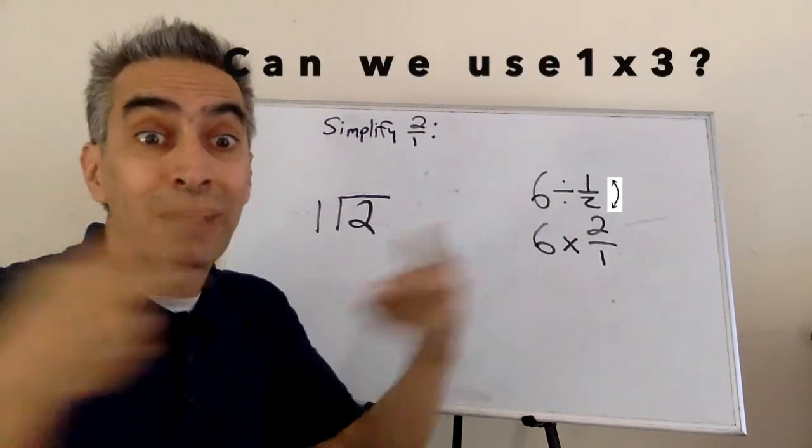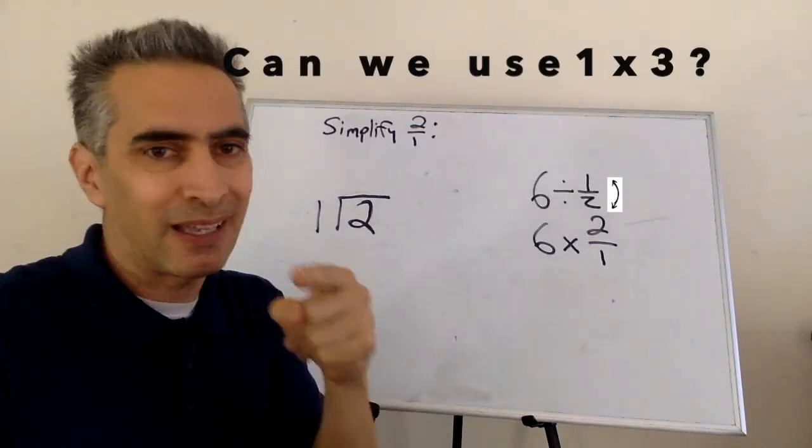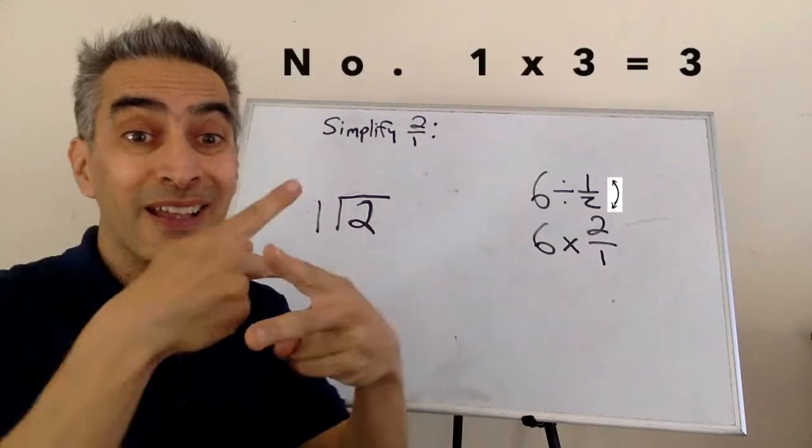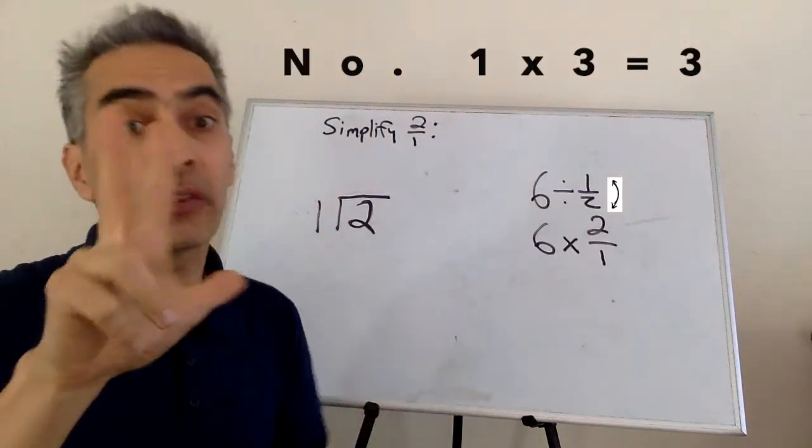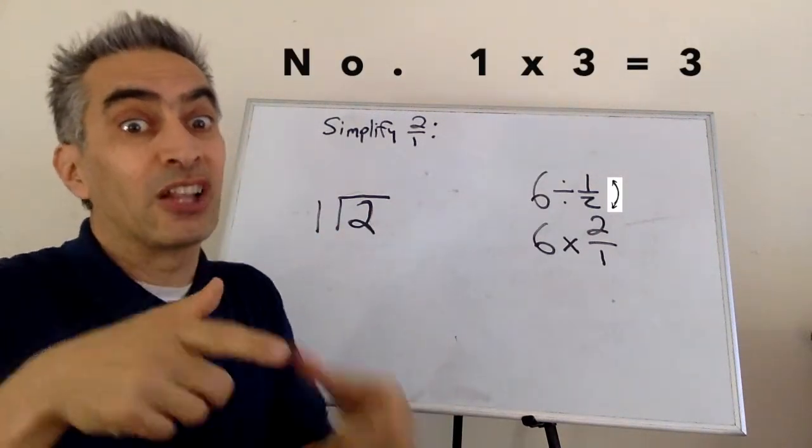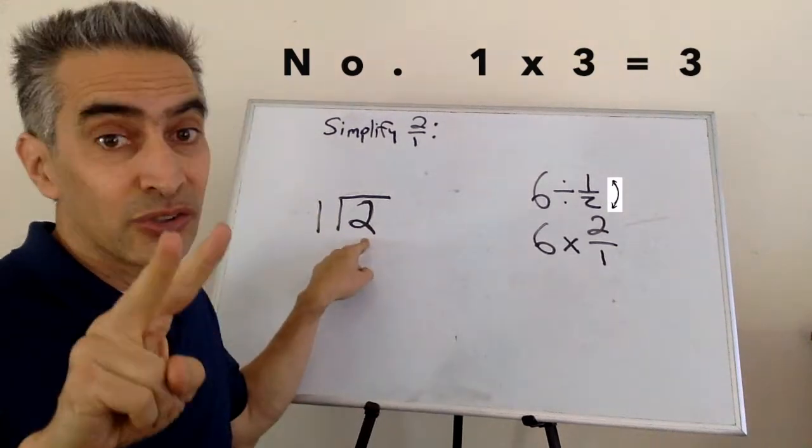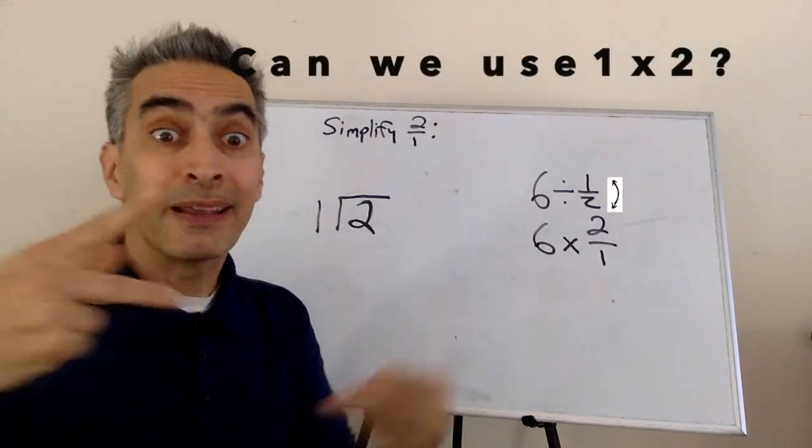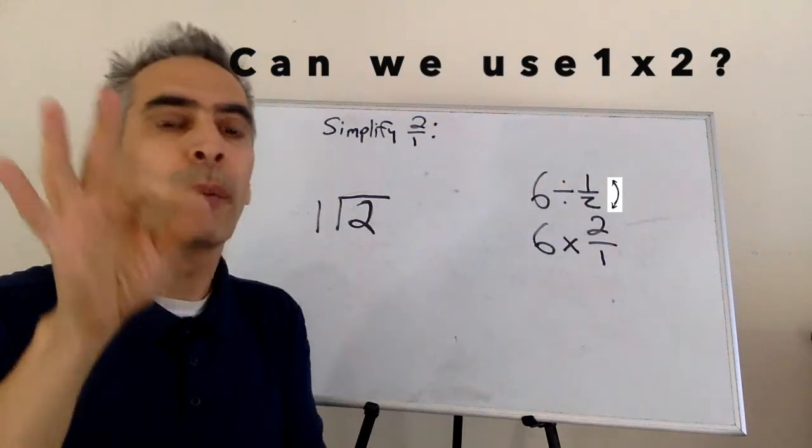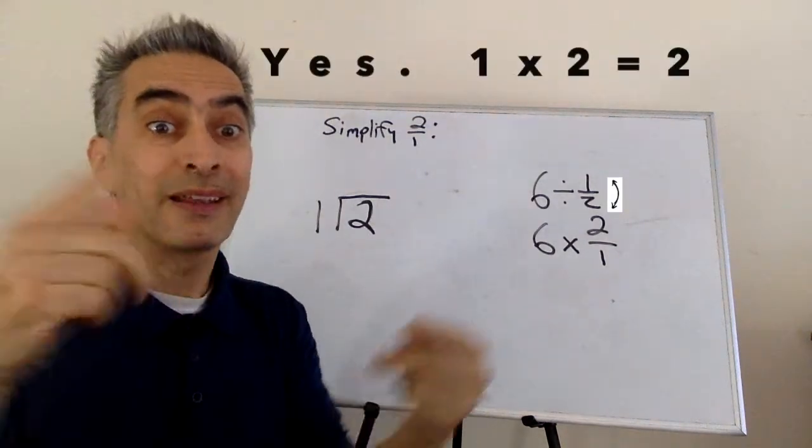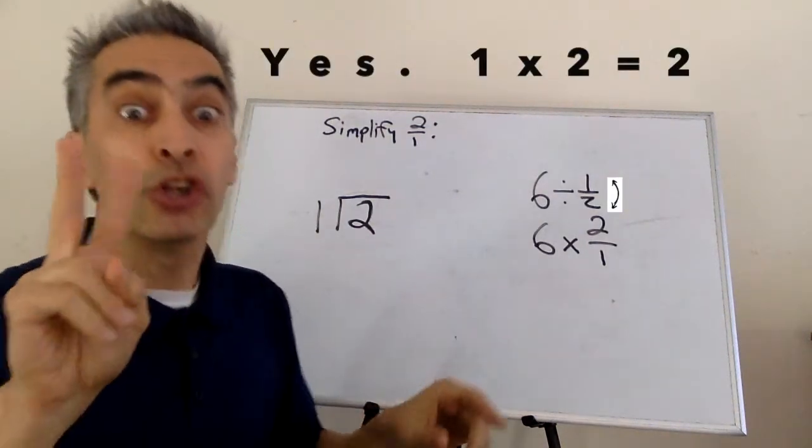Next, one times three. We can't use that because one times three equals three, and three is larger than two. One times two. Perfect. Because one times two equals two.